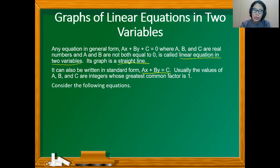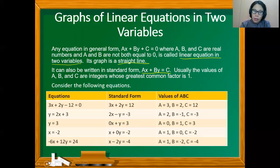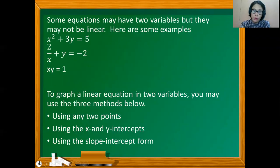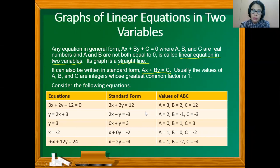If we consider the equation 3x plus 2y minus 12 equals 0, in standard form the constant term is transposed to the other side, so this becomes 3x plus 2y equals 12. The values of A, B, and C are 3, 2, and 12 respectively for the first equation.